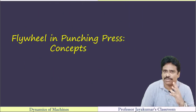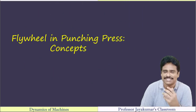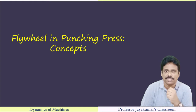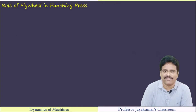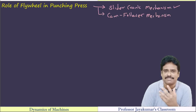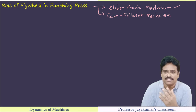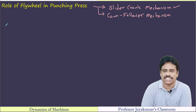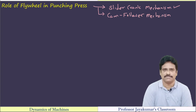Before going on to the problem, first let us discuss the various concepts involved in punching press problems. What is the role of a flywheel in punching press? Punching press basically employs either a slider crank mechanism or a cam follower mechanism for its operation. I am going to illustrate the slider crank mechanism.